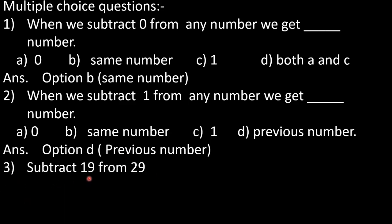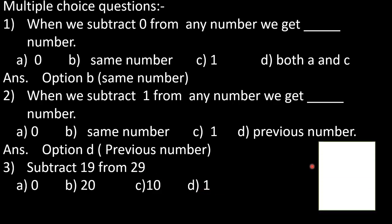Question number 3: subtract 19 from 29. Options A: 0, B: 20, C: 10, D: 1. We will solve it on the side — write places 1s and 10s, then 29 minus 19. Starting from 1s place: 9 minus 9 is 0, and 2 minus 1 is 1. So our answer is 10, which is option C — correct.